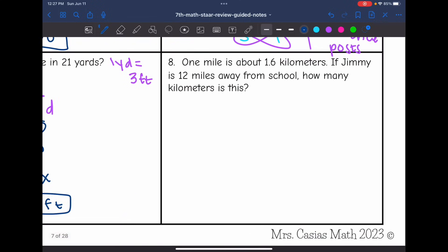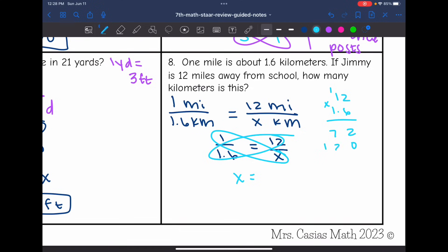All right, last one, number 8, says 1 mile is about 1.6 kilometers. If Jimmy is 12 miles away from the school, how many kilometers is this? So you can see I used the information to set up my proportion there. And now I'm going to write this without the labels. 1 over 1.6 equals 12 over x. And I'm going to solve this using cross multiplication. So 1 times x is x. And 1.6 times 12 is 19.2. So how many kilometers away is that? It would be 19.2 kilometers.